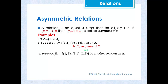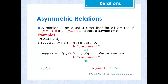Another example: suppose we have a relation R3 on the same set A containing ordered pairs (1,3), (3,1), and (2,3). Is R3 asymmetric? Here we have a pair (x,y) = (1,3) and we also have (3,1) which is (y,x). Since both (x,y) and (y,x) are present, this is not allowed in asymmetric relation, so R3 is not asymmetric.